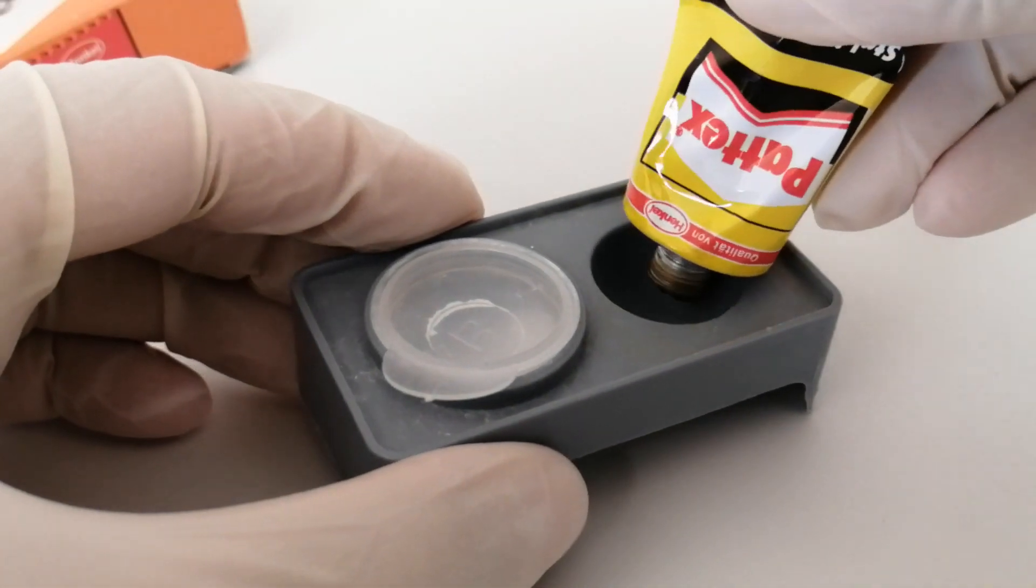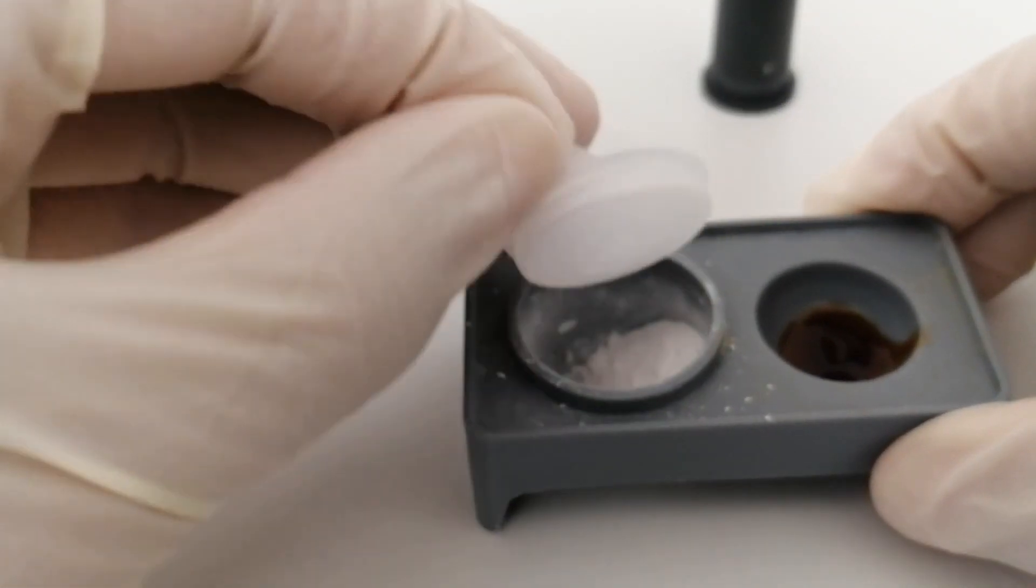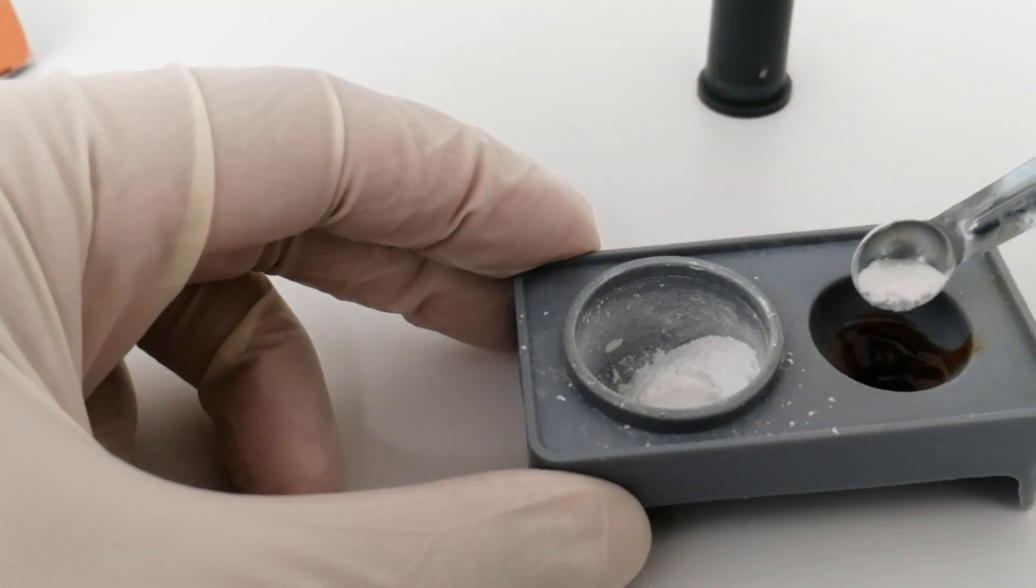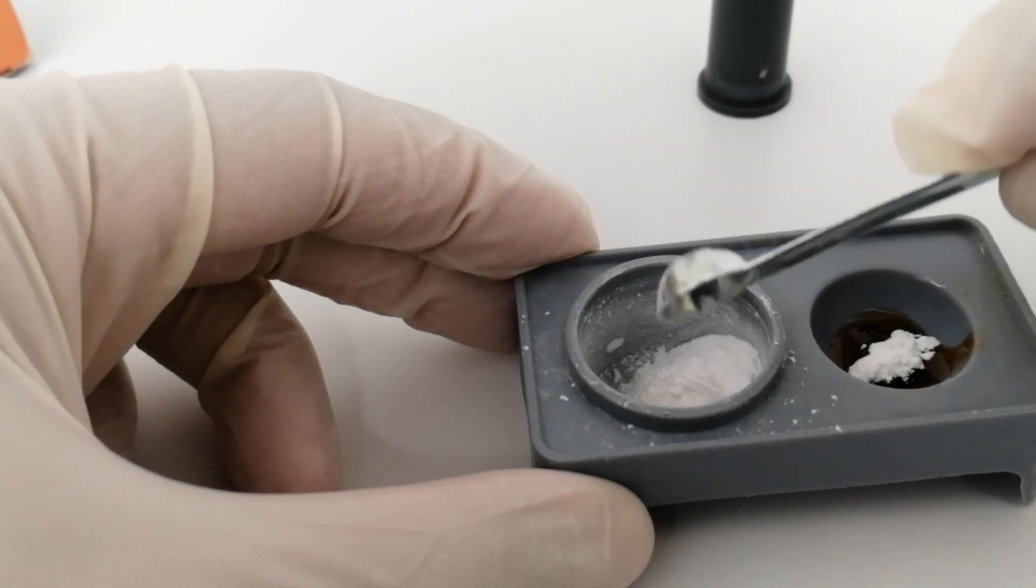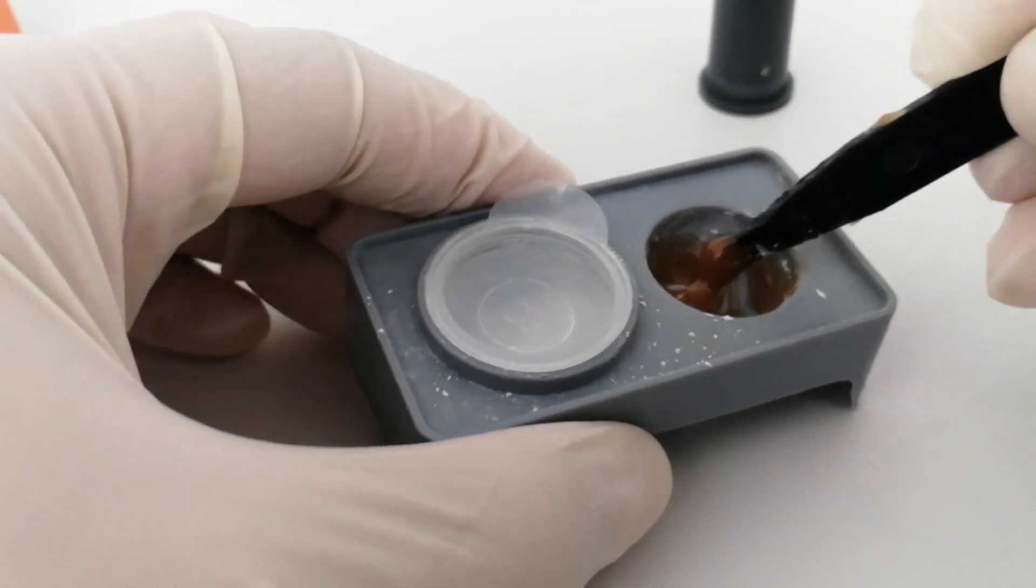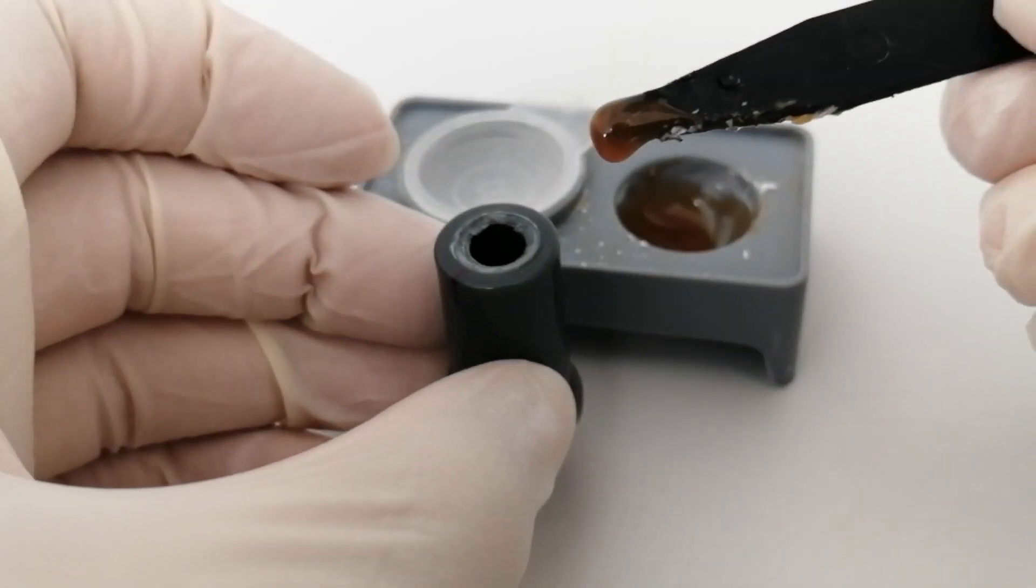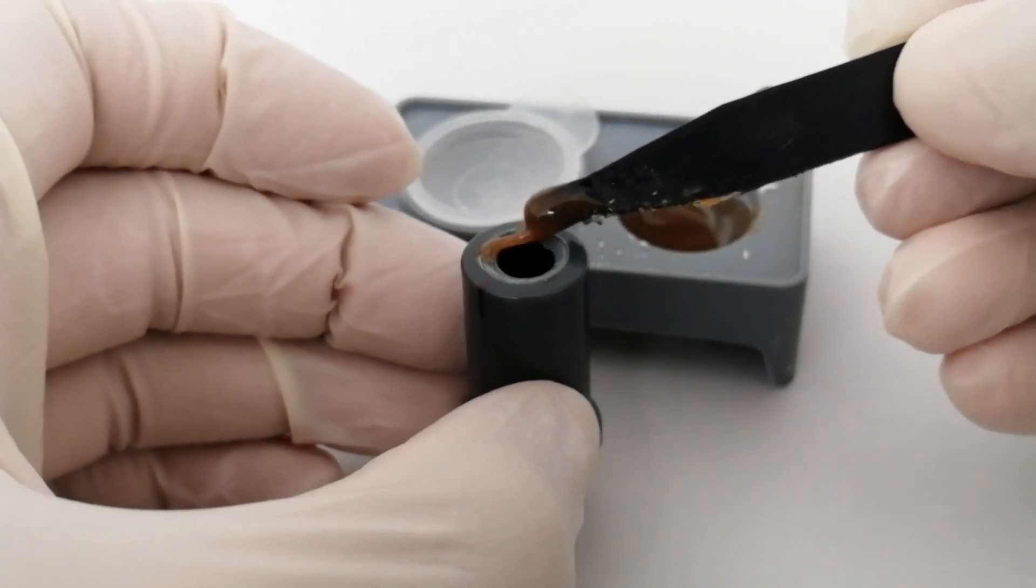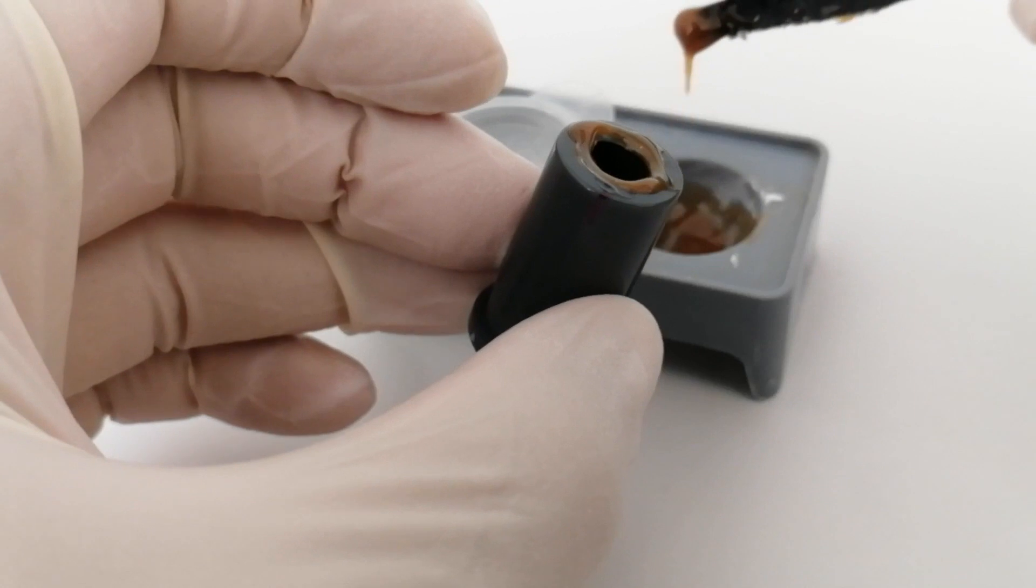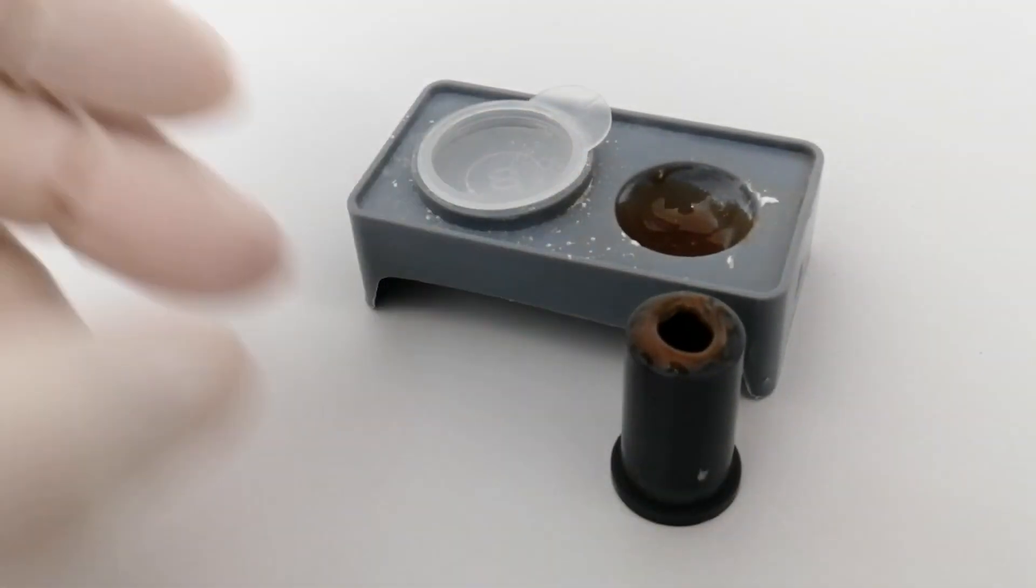Fill this in the small bucket. We don't need much. So I've mixed it for approximately three to four minutes continuously. I'm going to apply this where I want to bond it, covering the surfaces on both parts.